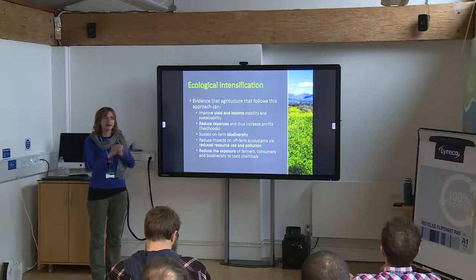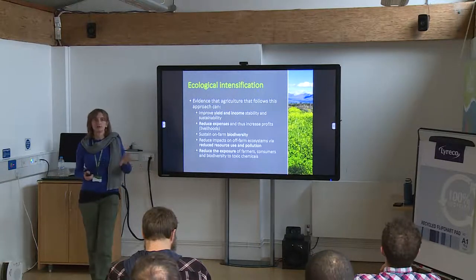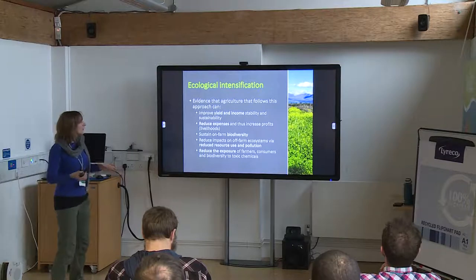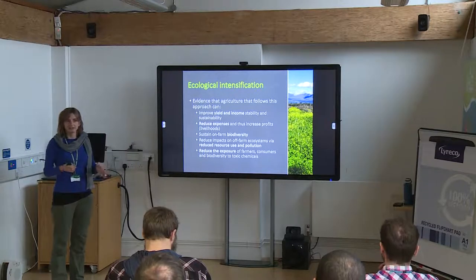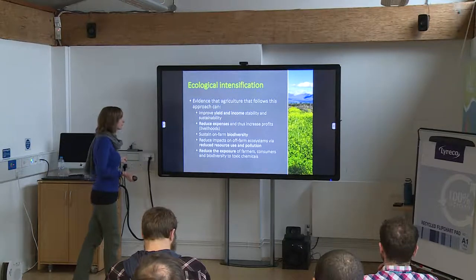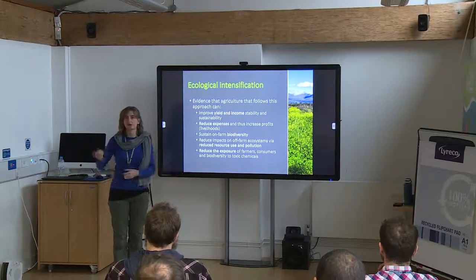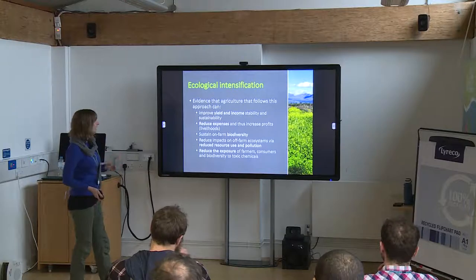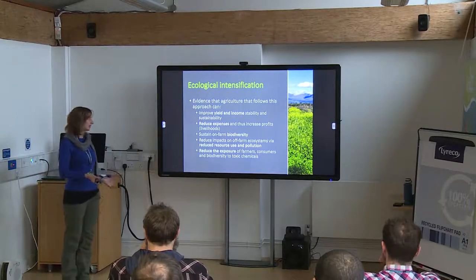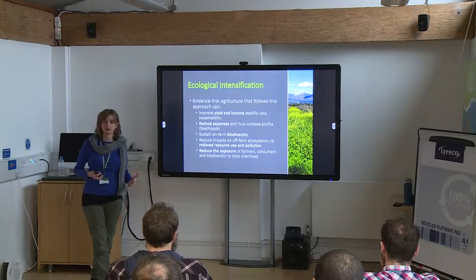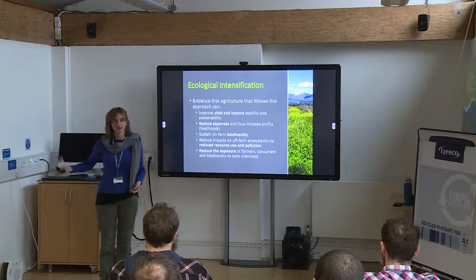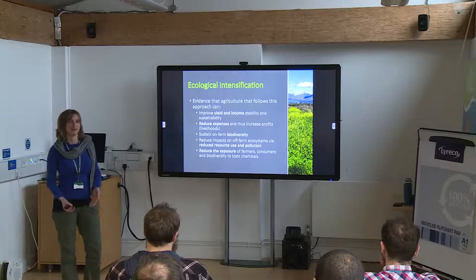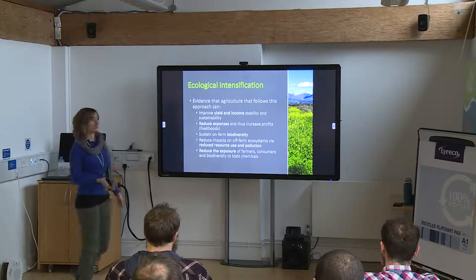There's loads of evidence now that agricultural systems that mimic ecosystem functions — using a lot of diversity, setting up different trophic levels — can increase yield and yield stability through creating more resilient systems that are less vulnerable to shocks. It can reduce expenses for farmers because if you're not buying a herbicide because you've set up your system so you don't need to, that's more money in your pocket. It can help sustain on-farm biodiversity and reduces the impacts associated with inputs. If you create a fertilizer there's a huge carbon footprint — it leaches out and you have pollution. If you're not using those things, everything stays in the system.